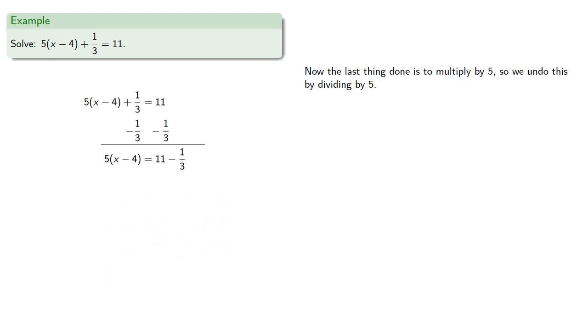Now in our expression, the last thing done is to multiply by 5, and so we undo this by dividing by 5. And again, we could do the fraction arithmetic, but remember for now, for b not equal to 0, the quotient a divided by b can be written as the fraction a/b. And so we'll divide both sides by 5 and get our fractional expression.